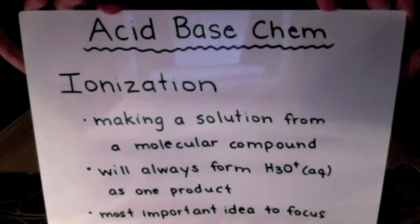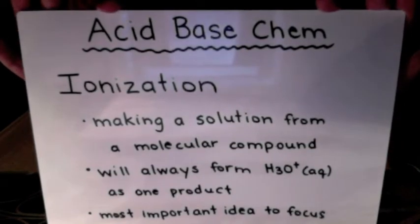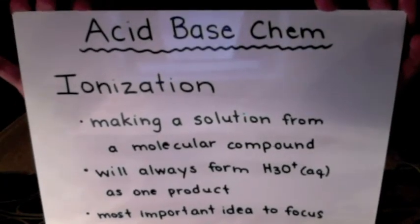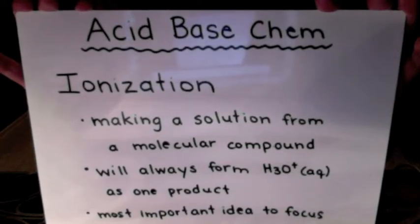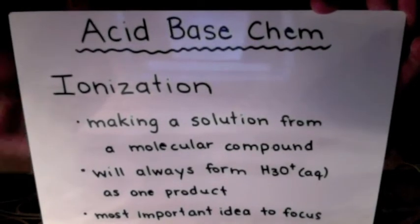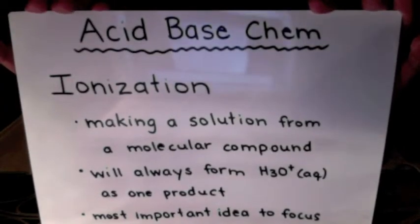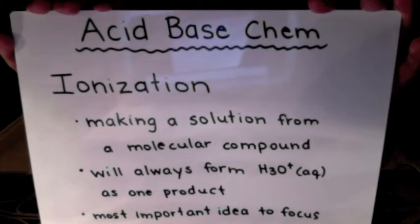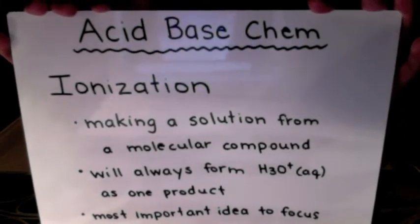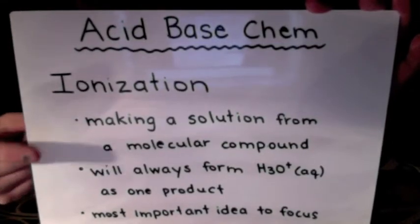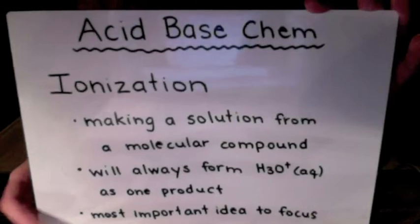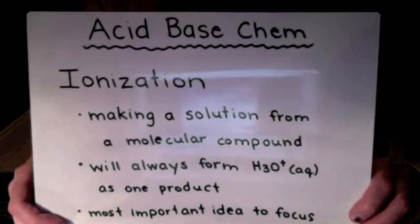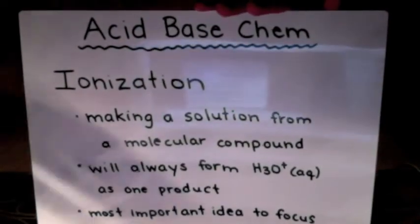Ionization is the making of a solution from a molecular compound. You're always going to form H₃O⁺. H₃O⁺ is just an acid attached to a water molecule. If you don't remember that plus, you're not going to get marks. So make sure you remember it's an H₃O⁺ ion. This is one of the most important ideas you learn from Chem 20 to get on to Chem 30 — it's the basis of your calculations from now on.